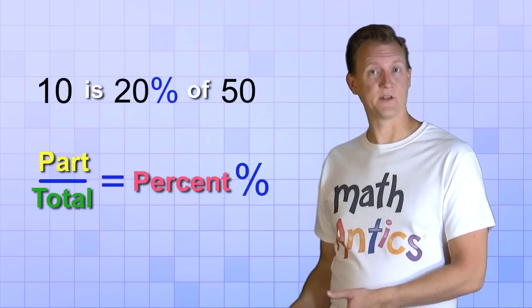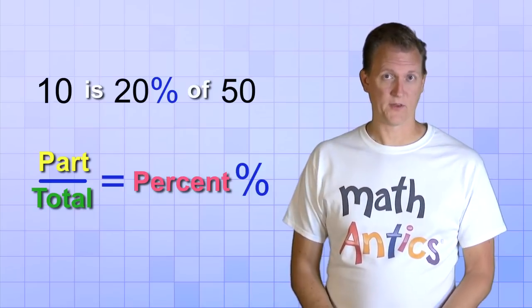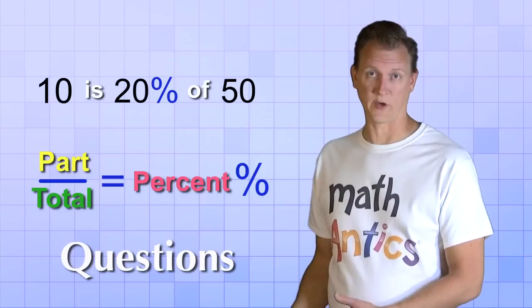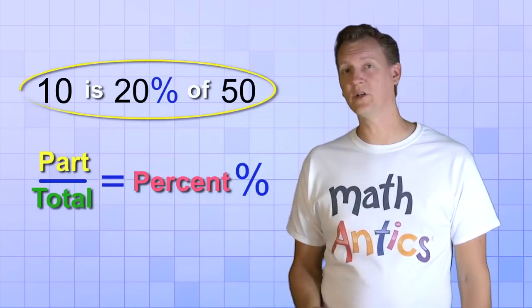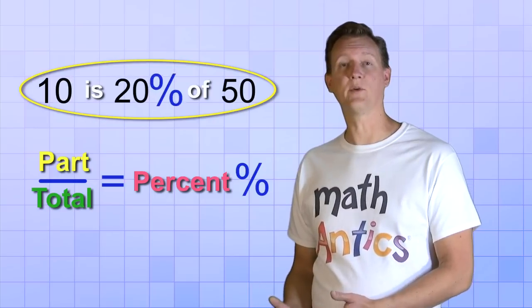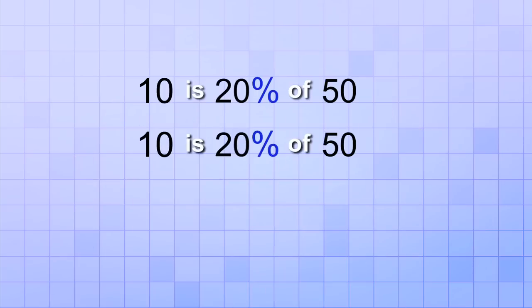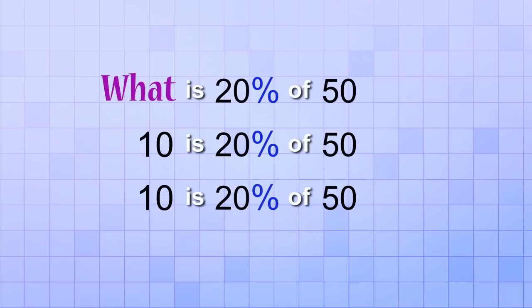And since there's three different numbers that can change in a percentage problem, that means there's three different questions that you can ask. To see these three questions, let's rewrite our original statement, 10 is 20% of 50, three different times. But in the first statement, we replace the 10 with the word what, and it becomes what is 20% of 50.